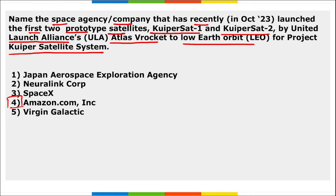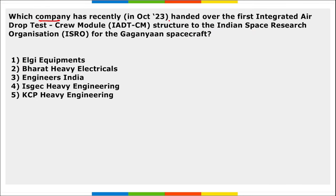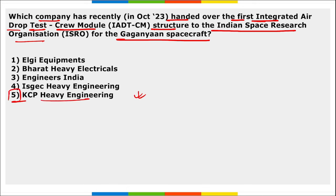Next: which company recently handed over the first integrated airdrop test crew module structure to ISRO for the Gaganyaan spacecraft? It is KCP Heavy Engineering. They handed over this structure to ISRO for the purpose of assessing technology readiness.